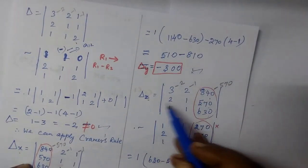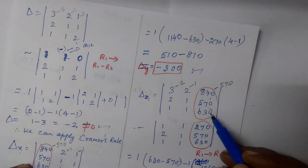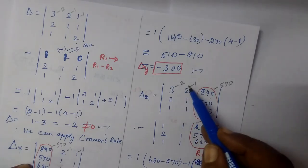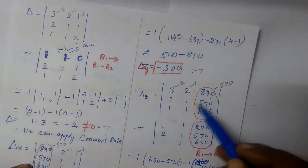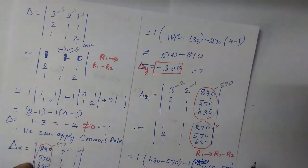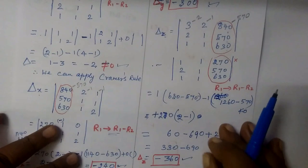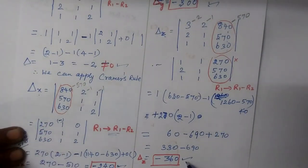Then del z, the third column is replaced with constants. You can use the determinant method directly. So the answer for this is minus 360.